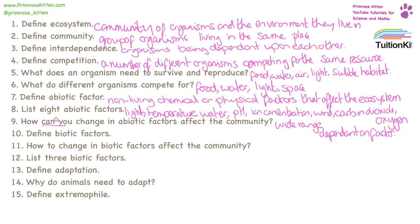Biotic factors are the living parts of an ecosystem. A change in the levels of food, the levels of predators or pathogens in a community can have a devastating or transformative effect on an ecosystem. Three biotic factors could be food, predators, or pathogens.